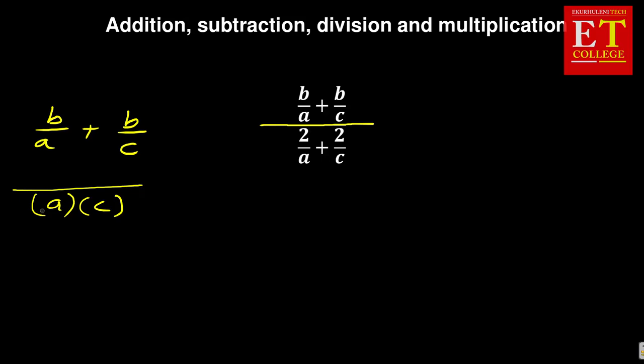So a into a c, when a divides into a c, the a and the a cancel, it will remain with the c. And the c will multiply the top part, which is b, plus the c will divide into a c. The c and the c will cancel to remain with the a and the a will multiply the top b. So now what we are left with is b c plus a b all over a c.